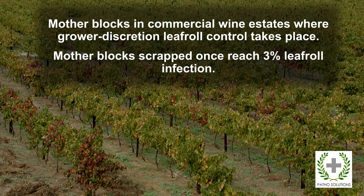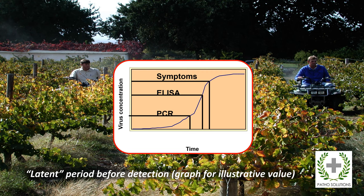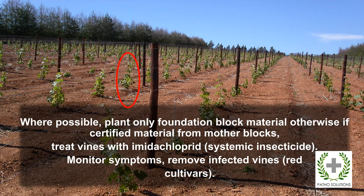From the foundation blocks, the mother blocks are in commercial wine estates, and it's up to the grower whether they do leafroll control and to what extent. Mother blocks are scrapped once they reach 3% leafroll infection. This is a weakness in our certification scheme — it would be far better if these mother blocks were completely under the control of the plant improvement organizations — but the numbers involved don't allow that. Because of that and the potential for reinfection, we have to take into account that the virus can be present for a while without being detectable by PCR, ELISA, or even symptoms.